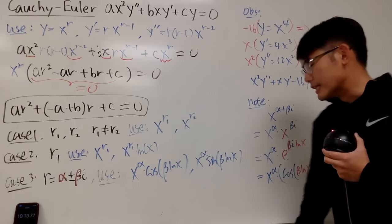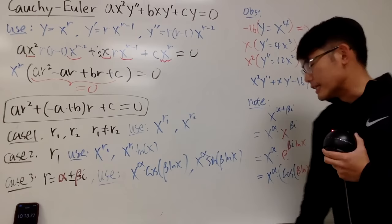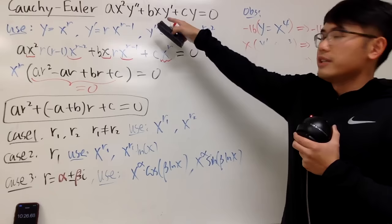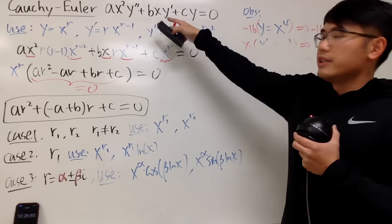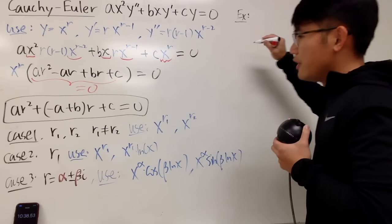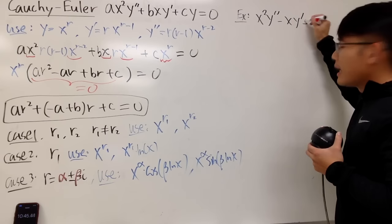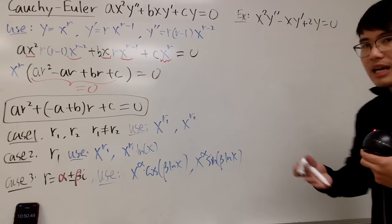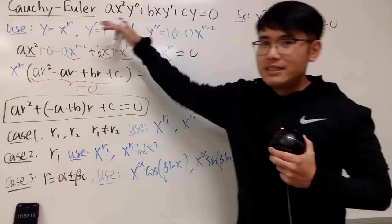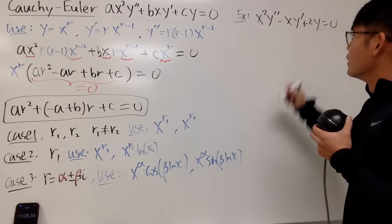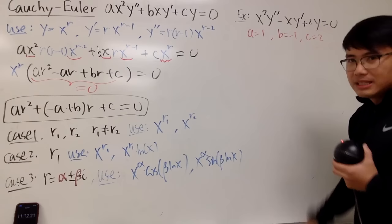This is similar to the second-order equation with constant coefficients, except here we have x² and x rather than constants. Let me show you an example. Solve: x²y″ − xy′ + 2y = 0. You can identify a = 1, b = −1, c = 2, and plug into the characteristic equation formula.